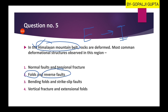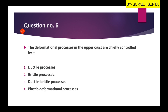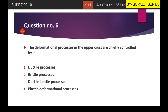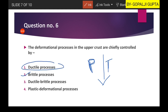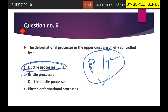Question six: the deformational processes in the upper crust are chiefly controlled by... In the upper crust, deformation is brittle in nature. As we move downward, pressure and temperature increase: increased pressure causes the material to behave in a brittle manner, and increased temperature causes ductile behavior. Deep in the crust we find ductile processes such as folding, while brittle processes include faulting and joints. So the second option is our right answer.